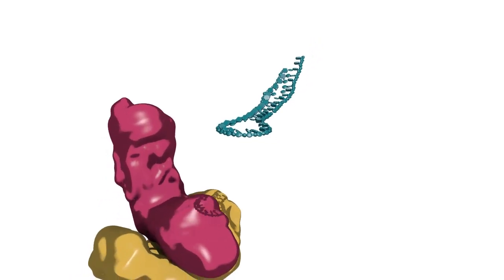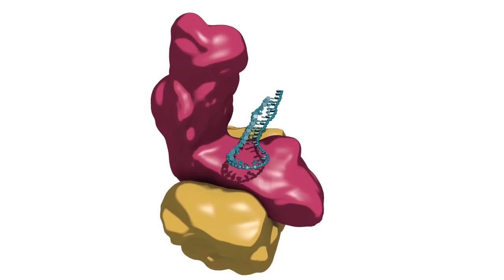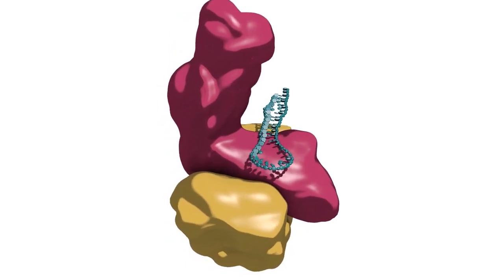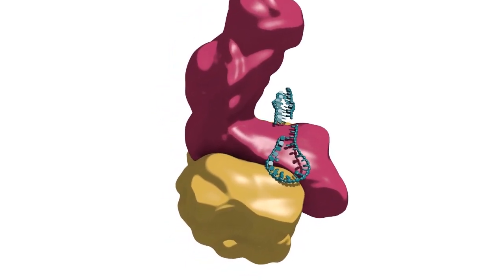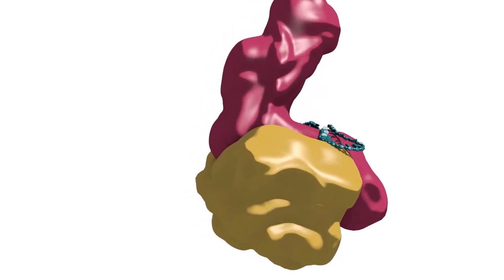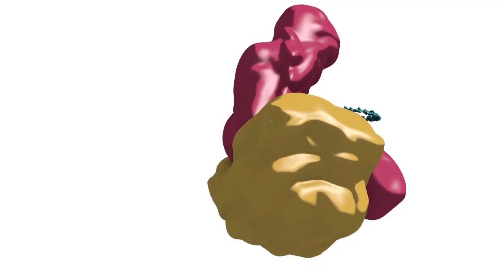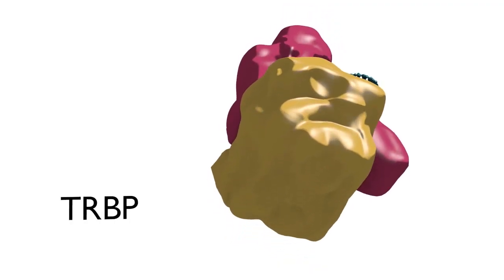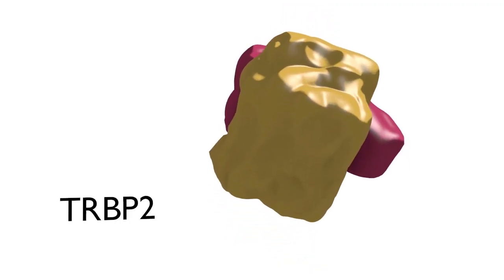In the cytoplasm, a second endonucleolytic cleavage reaction, generally referred to as dicing, is catalyzed by Dicer, another RNase III enzyme. Dicer is found in complex with a double-stranded RNA binding protein called the TAR RNA binding protein II or TRBP2.